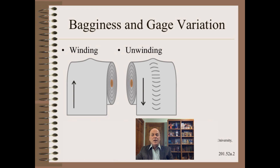No web manufacturing and no web converting process will make a perfectly level sheet with regard to basis weight, caliper, density, or thickness. Profile variations and thickness-like properties across the width of the web may be the single largest cause of many winding and some web defects. Shown here is the most common root cause for bagginess — stretching over gauge bands. It is the largest cause of bagginess in paper and textiles, and the cause of nearly all bagginess in other materials such as film, foil, and non-wovens.